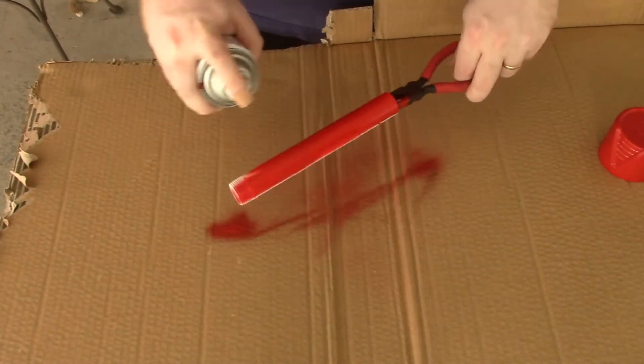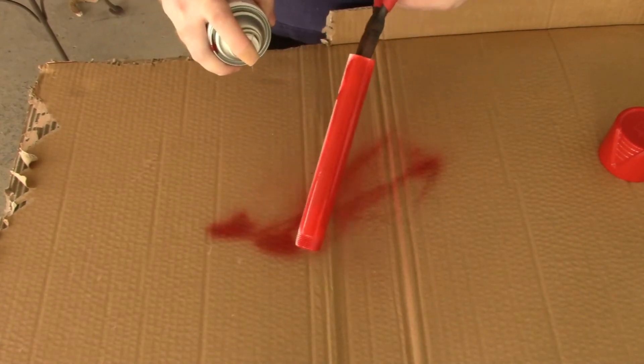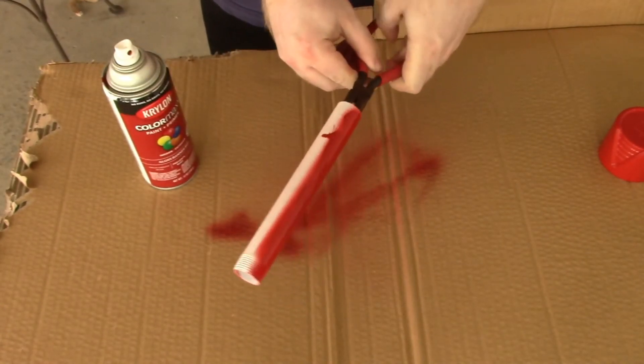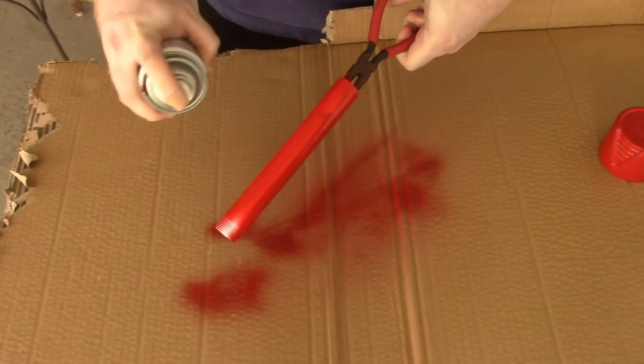Then just hold the can four to six inches away from the surface of the piece and spray. If you spray at the same spot for too long, the paint can start to drip and run. If you want to avoid this, sweep your can in broad, quick strokes while you're spraying.